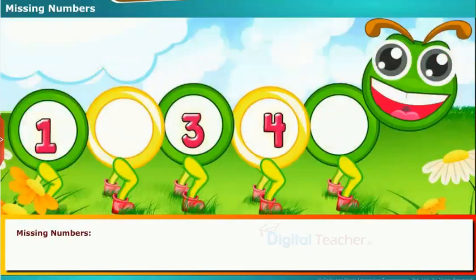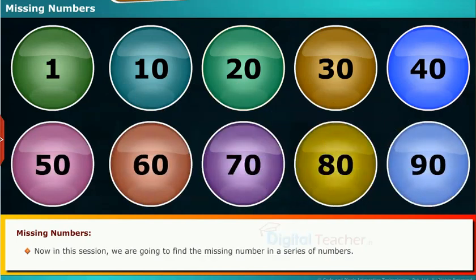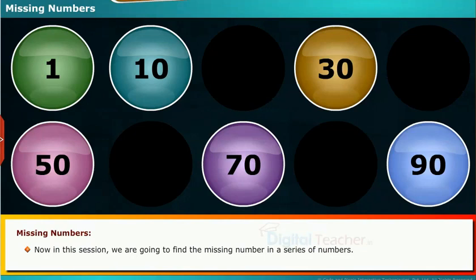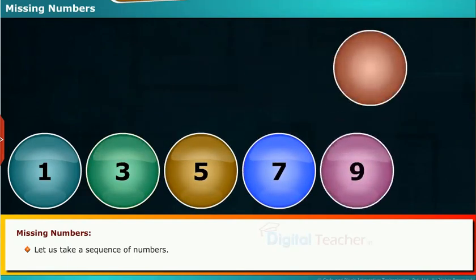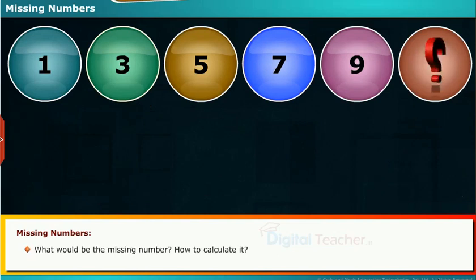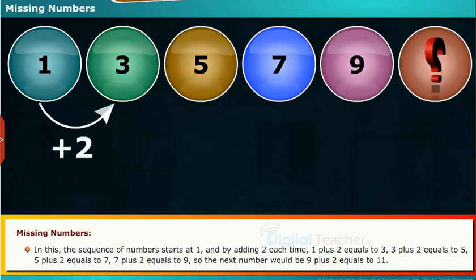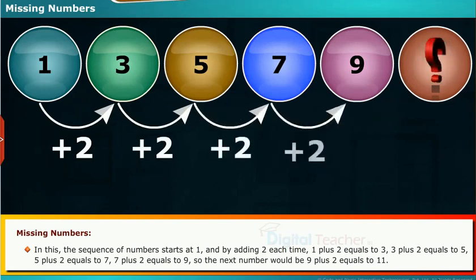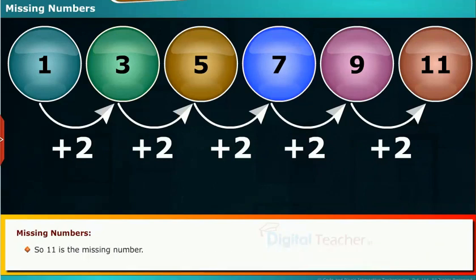Let us now discuss missing numbers. In the previous sessions we have learned the expansion of numbers and number forms. Now in this session we are going to find the missing number in a series of numbers. For example, take a sequence starting at 1 and adding 2 each time: 1 plus 2 equals 3, 3 plus 2 equals 5, 5 plus 2 equals 7, 7 plus 2 equals 9. So the next number would be 9 plus 2 equals 11. So 11 is the missing number.